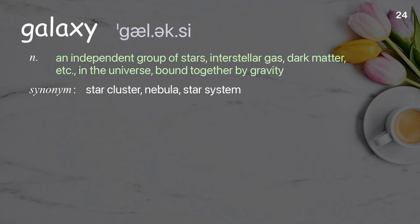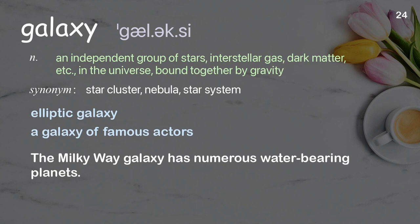Galaxy: An independent group of stars, interstellar gas, dark matter, etc., in the universe, bound together by gravity. Examples: Elliptic galaxy, A galaxy of famous actors. The Milky Way galaxy has numerous water-bearing planets.